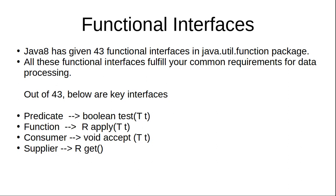Out of the 43 functional interfaces, I will discuss the most important key ones. The main four pillars are: Predicate, Function, Consumer, and Supplier. Predicate has a single abstract method called test(). It accepts a single input of generic type T and returns a boolean value.